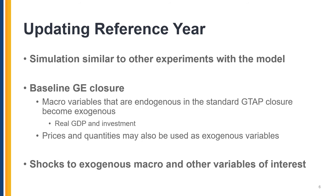To update the reference year of the GTAP database, we run a simulation similar to other experiments with the GTAP model — that is, we use the model itself to create a new database. A general equilibrium closure employed in the updating simulation ensures that internal consistency of the database is maintained. The updated post-simulation database can then be used for subsequent policy experiments.